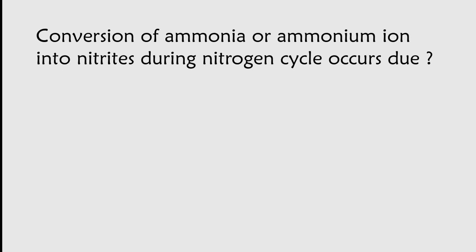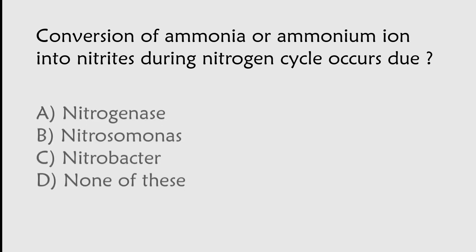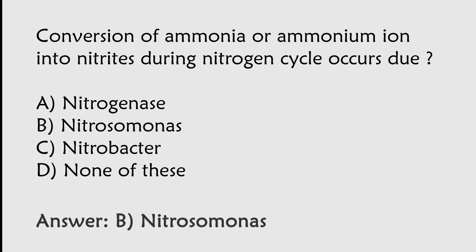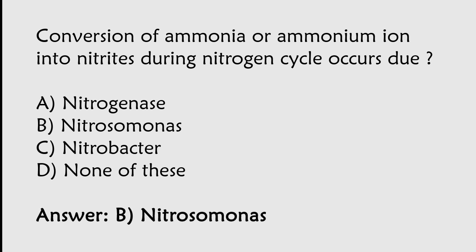Conversion of ammonia or ammonium ions into nitrates during the nitrogen cycle occurs due to: Nitrogenase, Nitrosomonas, Nitrobacter, None of these. The correct answer is Option B. This conversion occurs due to Nitrosomonas.